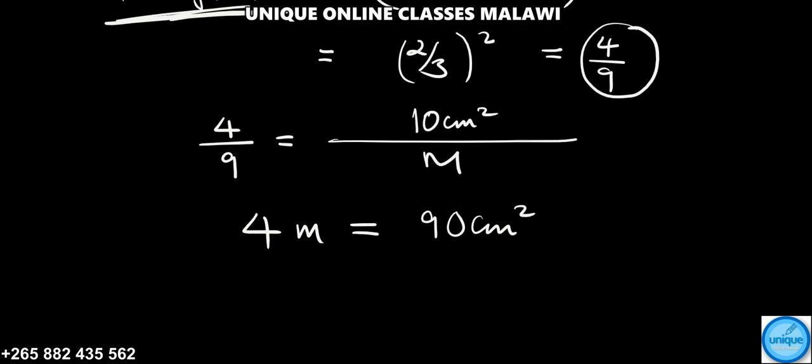Then to find the value of M, we're going to divide both sides by 4, which means that they will cancel, leaving with M.